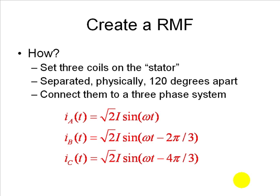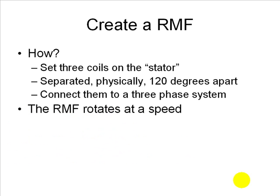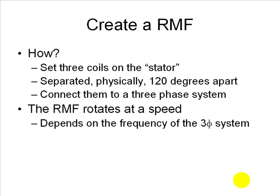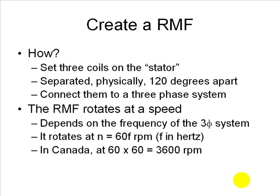We know that doing that will create a rotating magnetic field in the machine that turns about at a velocity that is the same in revolutions per second as the frequency of the currents in Hertz. In Canada, it rotates at 60 revolutions per second, that is 3600 revolutions per minute.